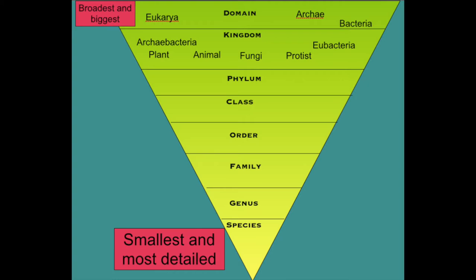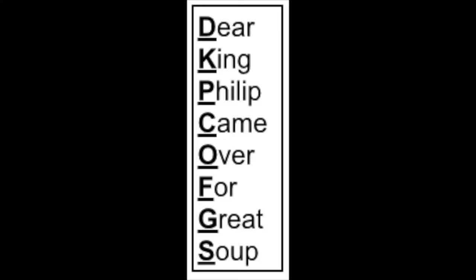You need to remember that order for the exam. To help you remember, there's a mnemonic sentence: 'Dear King Philip came over for great soup.' The first letter of each of those words gives you the first letter of the grouping — Dear for domain, King for kingdom, Philip for phylum, and so forth.